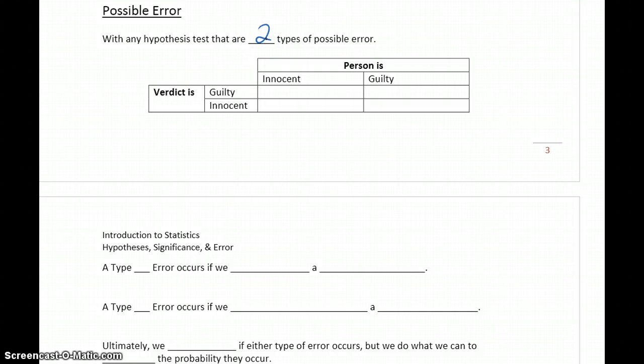With hypothesis testing, there are two different ways to be wrong, or two different types of possible error.